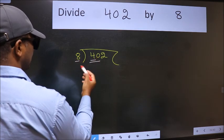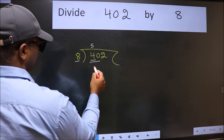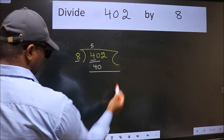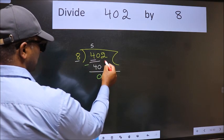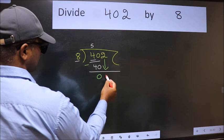When do we get 40 in 8 table? 8 times 5 is 40. Now, we should subtract. We get 0. After this, bring down the beside number. So, 2 down.